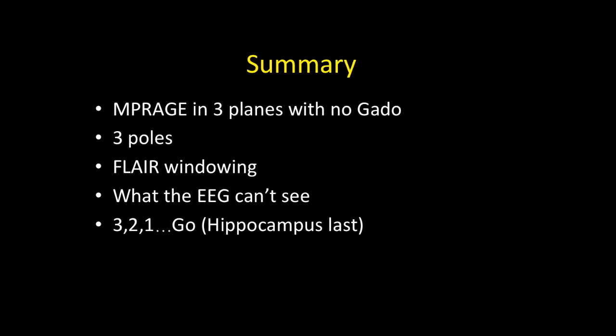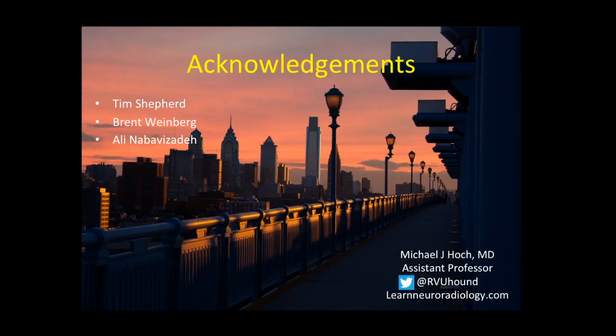To summarize the search pattern: T1 MP-rage first in three planes — sagittal midline, sagittal perisylvian, coronal ventricles, coronal three poles (frontal, temporal, occipital), then axial global view. Then FLAIR at two window settings — correct and aggressive — on axial and coronal. Don't forget to look where the EEG can't see: cingulate gyrus, insular gyrus. And then three, two, one — go to the hippocampus last. Thanks.